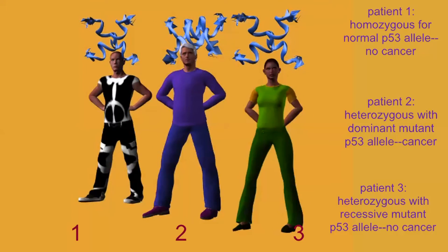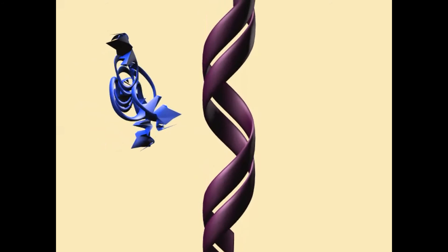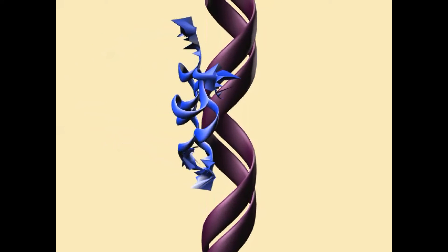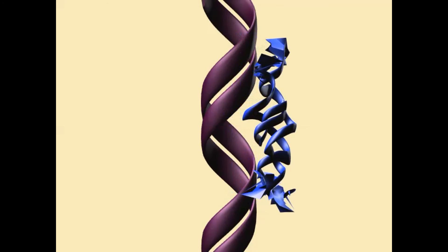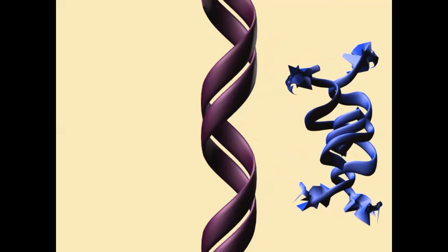But this mutation is a dominant allele because it has an abnormal shape. And even though the individual does produce some normal p53 protein, it complexes with abnormally shaped mutant protein, resulting in abnormally shaped tetramers which do not bind DNA. So this individual will be likely to develop cancer even though they do produce some normal protein.